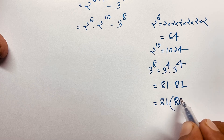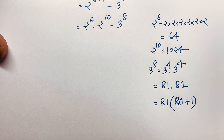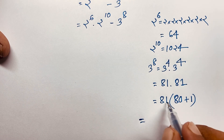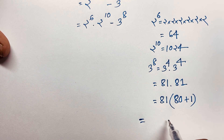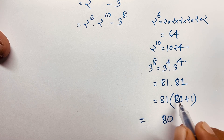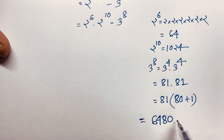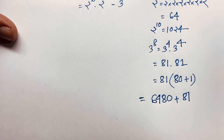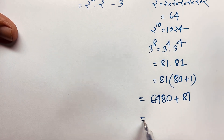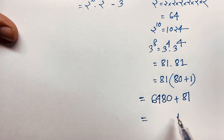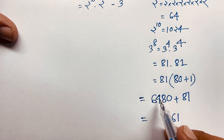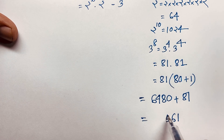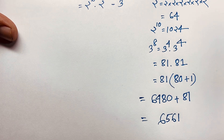We can write 81 as 80 plus 1. If I multiply this: 80 times 80 is 6400, 80 times 1 is 80, and 1 times 81 is 81. Adding these values: 6400 plus 80 plus 81 gives us 6561. So 3 to the power 8 equals 6561.